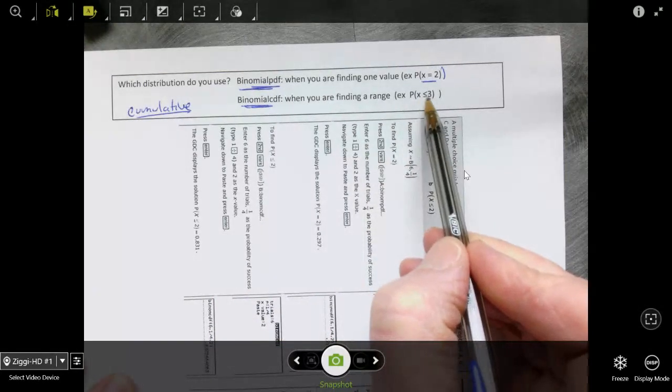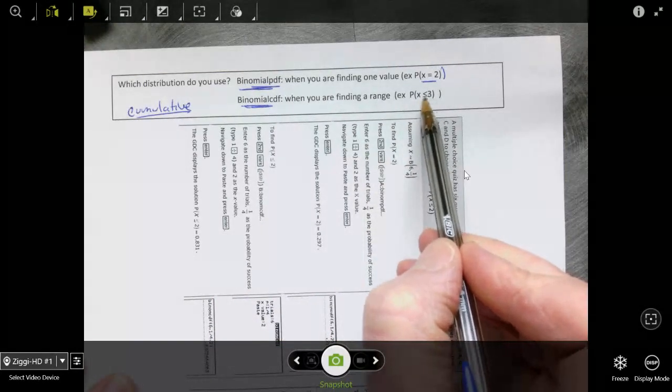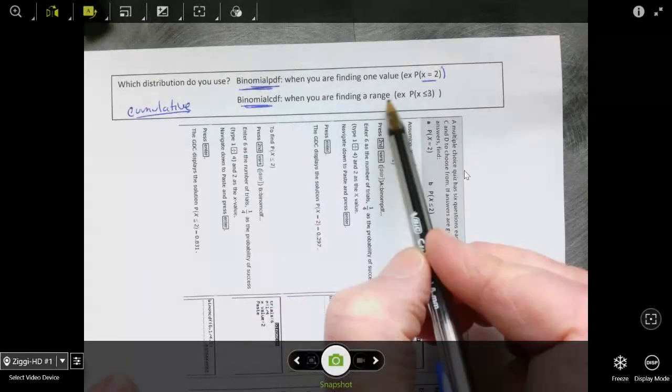And so that is a range of values. So for instance, all the values up to and including 3. And so you have to pay attention. Do you have an inequality or do you have an equality?